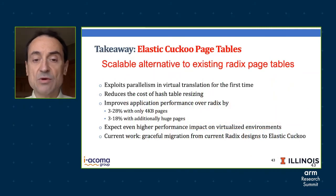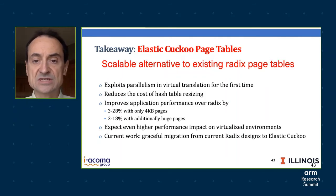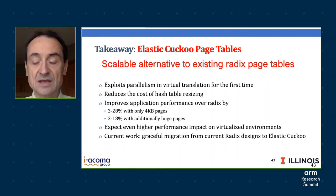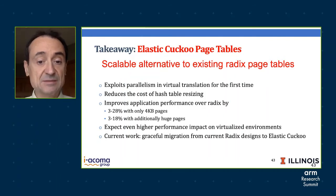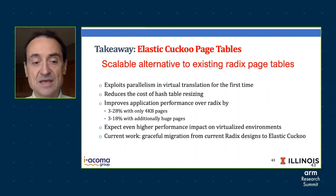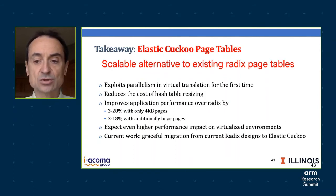To summarize, the takeaway of this work is that we have designed elastic cuckoo page tables, a scalable alternative to existing radix page tables. It exploits parallelism in virtual translation for the first time, unlike radix tables. It reduces the cost of hash table resizing. It improves application performance over radix by 3 to 28% with only four kilobyte pages and 3 to 18% with both four kilobyte and huge pages. We expect even higher performance impact on virtualized environments where there are many more radix accesses. Currently, the work is designing a graceful migration from current radix designs to elastic cuckoo.